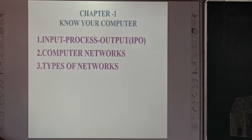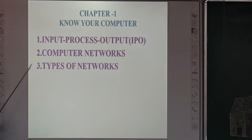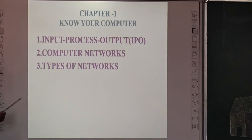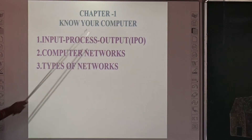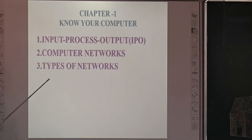What is Input, Process, Output? In input, we will give the input. Input devices are keyboard and mouse — using them, we give the input. For process, the CPU is the process device; using it, we process the information. Using the output device, we display the output.